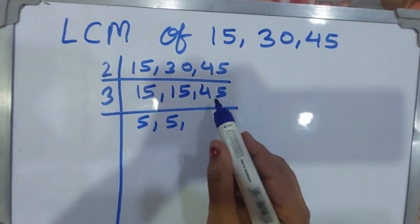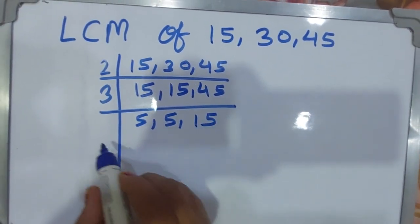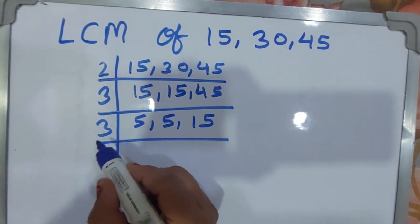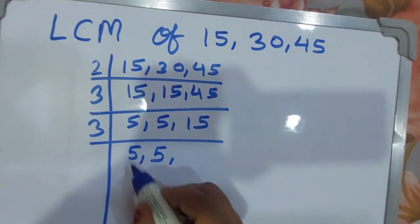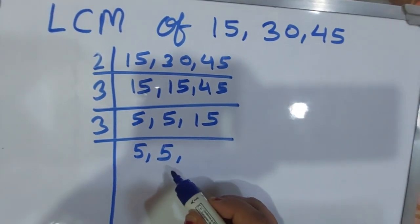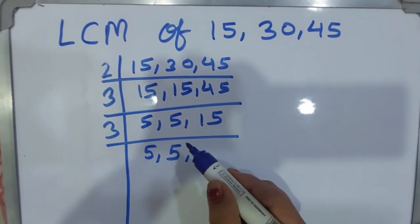Now you can divide it by 5. By 3, then 5 and 5 as it is. You can write because 5 is not divisible by 3, so you can write now 5. Now you can take the next prime number, it will be 5. 5 goes into 5 one time, 5 goes into 5 one time, and 5 goes into 5 one time.